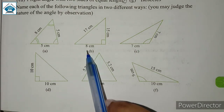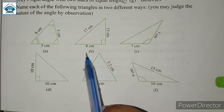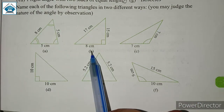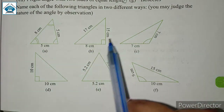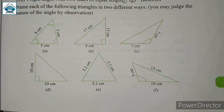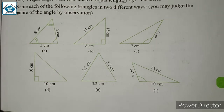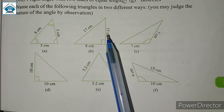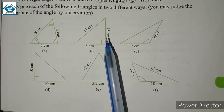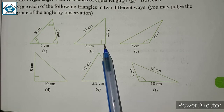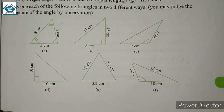Similarly, for the second triangle, looking at the sides, they have three different measurements — they are not equal. All three sides of the triangle are of different lengths, so it is a scalene triangle. Speaking of angles, one angle of the triangle is 90 degrees — it is a right angle. So, this triangle is a right angled triangle as well.